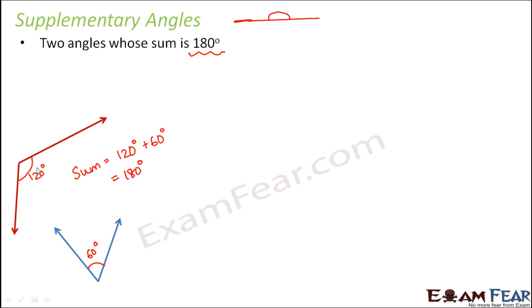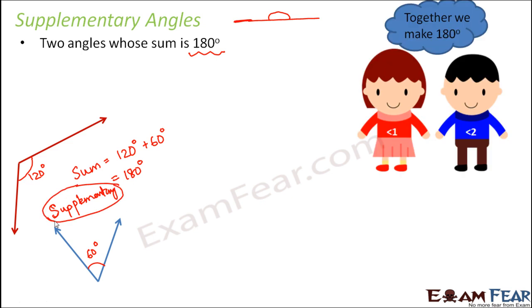Now, since the sum is 180 degrees, therefore, these two angles are supplement of each other or we can say that these are supplementary angles. So exactly the same concept if you have angle 1 and angle 2, if angle 1 plus angle 2 is equal to 180 degrees, that means these two angles are supplementary angles.